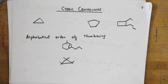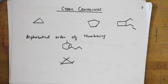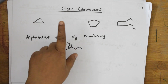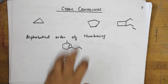Welcome back, students. Today's video will cover the nomenclature of cyclic compounds. We have seen these before — from C1 to C20 were isolated, but among them, C1 to C6 are well known to us.